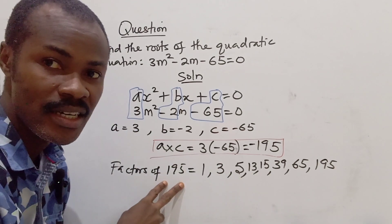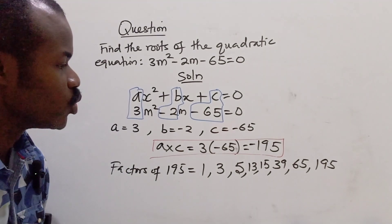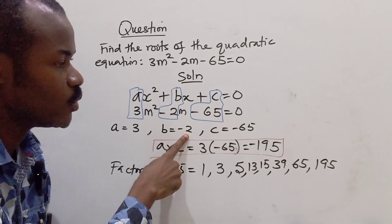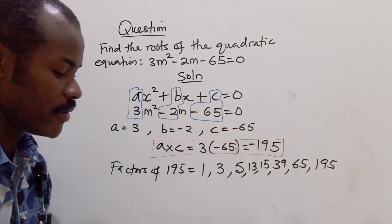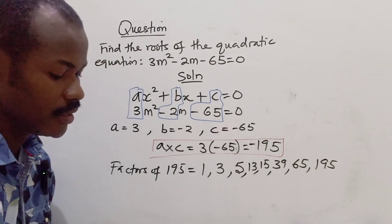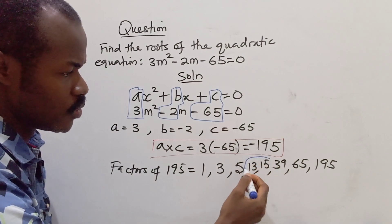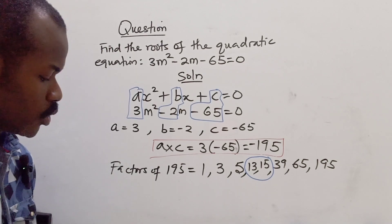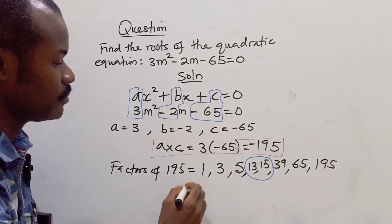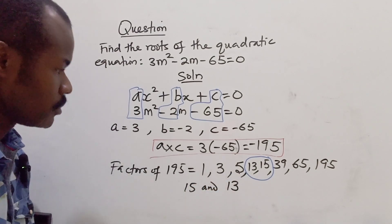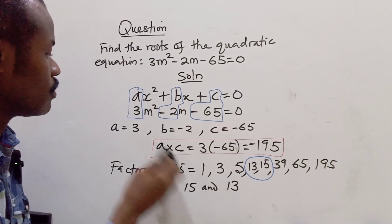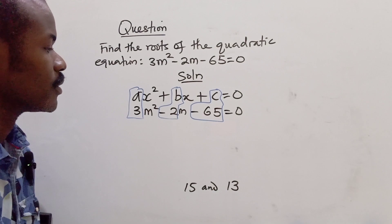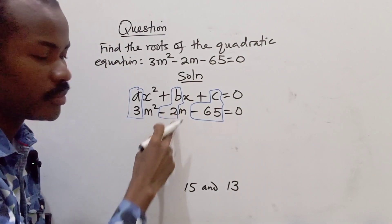Now the next step is we want to look for two numbers that when you add them you're going to get -2, and when you multiply them you're going to get -195. By examining the factors here, the numbers that look close to what we want are these two numbers. So the numbers are 15 and 13. Now we want to put the signs for these two numbers.